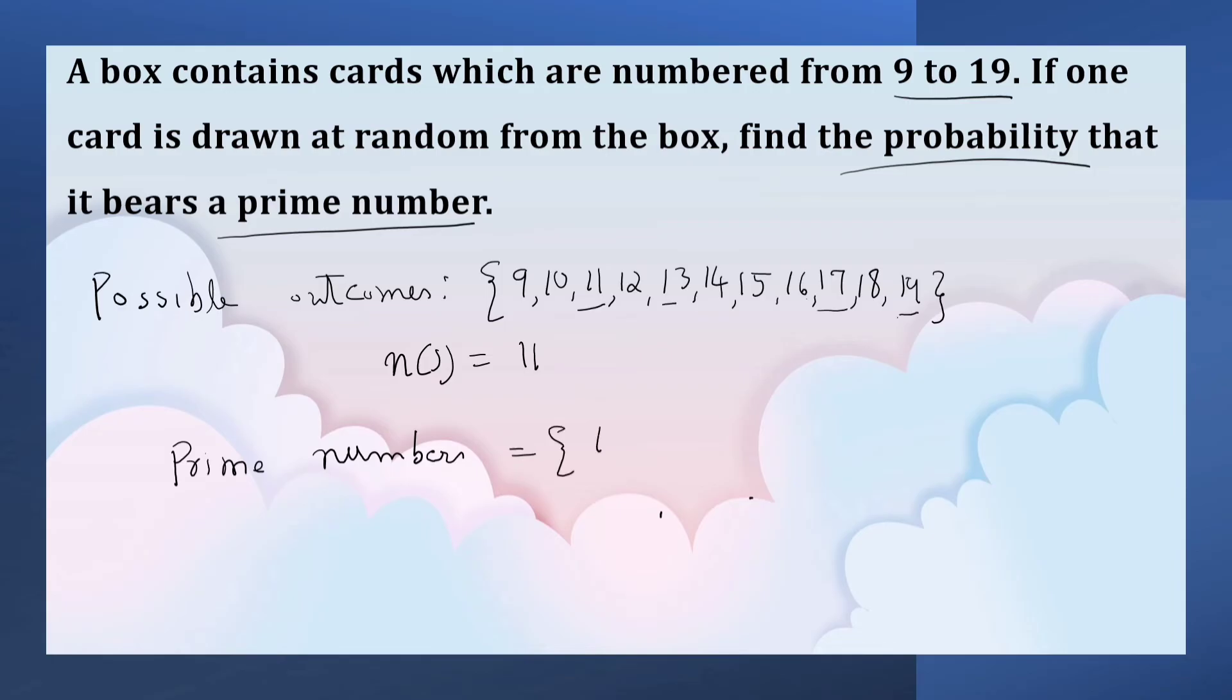Prime numbers: 11, 13, 17, 19. So, number of E is equal to 4.